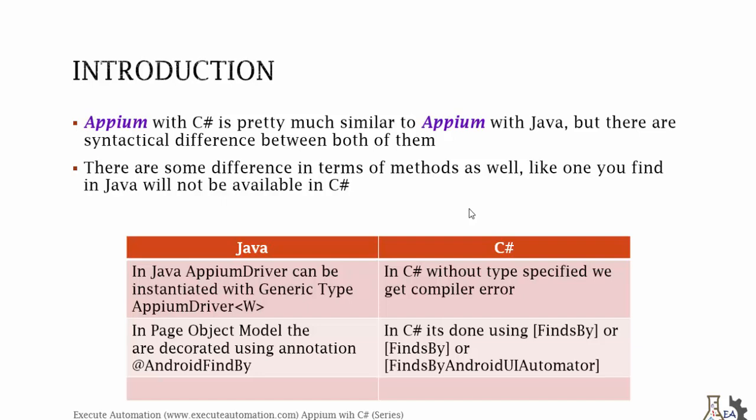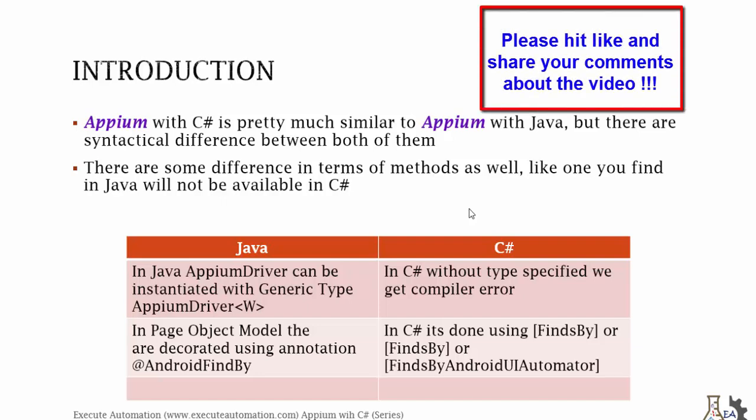We will start our discussion by setting up our environment, then writing a simple code, identifying objects, and performing operations in native, web, and hybrid applications, and finally how to write a simple framework using Appium. That's what this Appium with C-Sharp series is all about. Let's not waste any more time and get started. Thank you very much for watching, and have a great day!